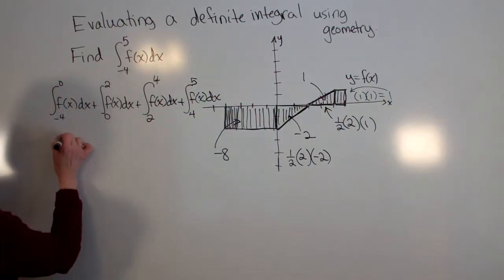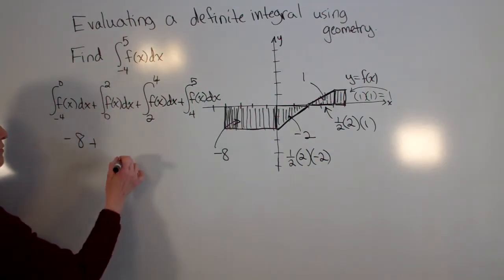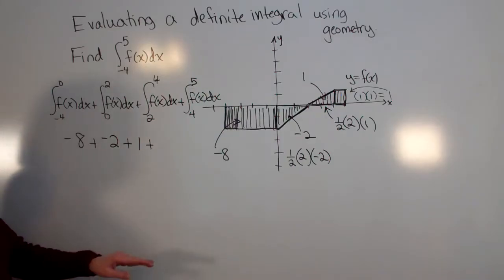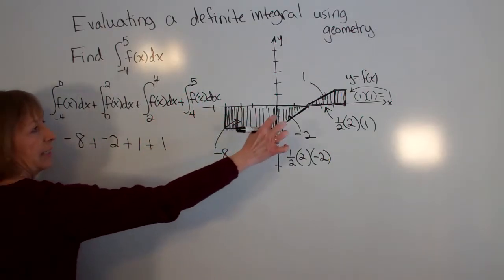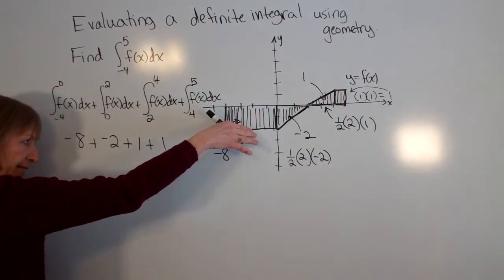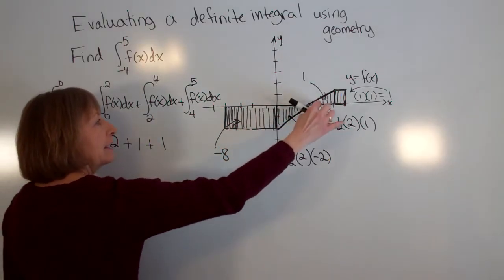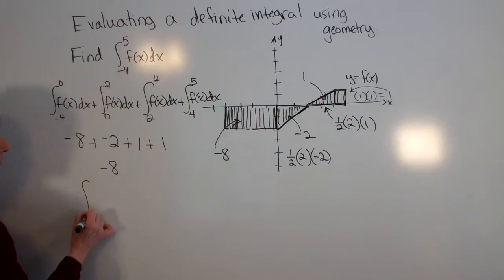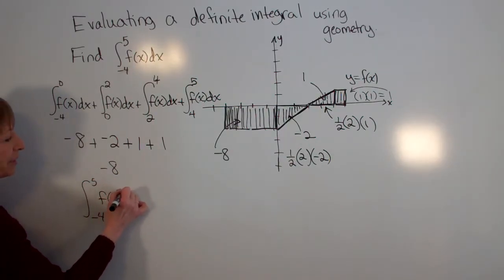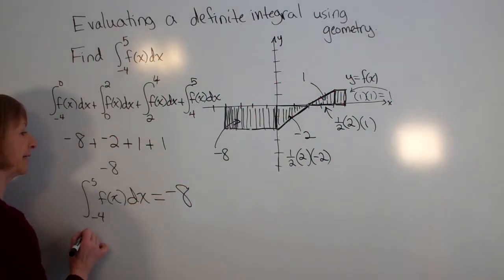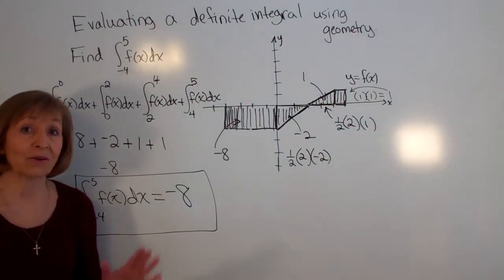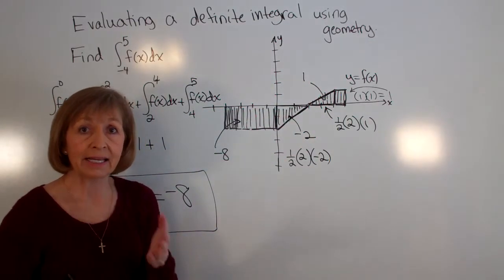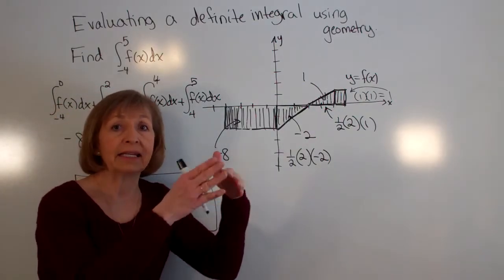We found that the first piece is negative 8, the next is negative 2, then 1, and then another 1. Keeping in mind that when the function is below the x-axis outputs are negative, and when above the x-axis outputs are positive, we get: negative 8 plus negative 2 plus 1 plus 1, which equals negative 8 as the value of the definite integral from negative 4 to 5 of f(x) dx.